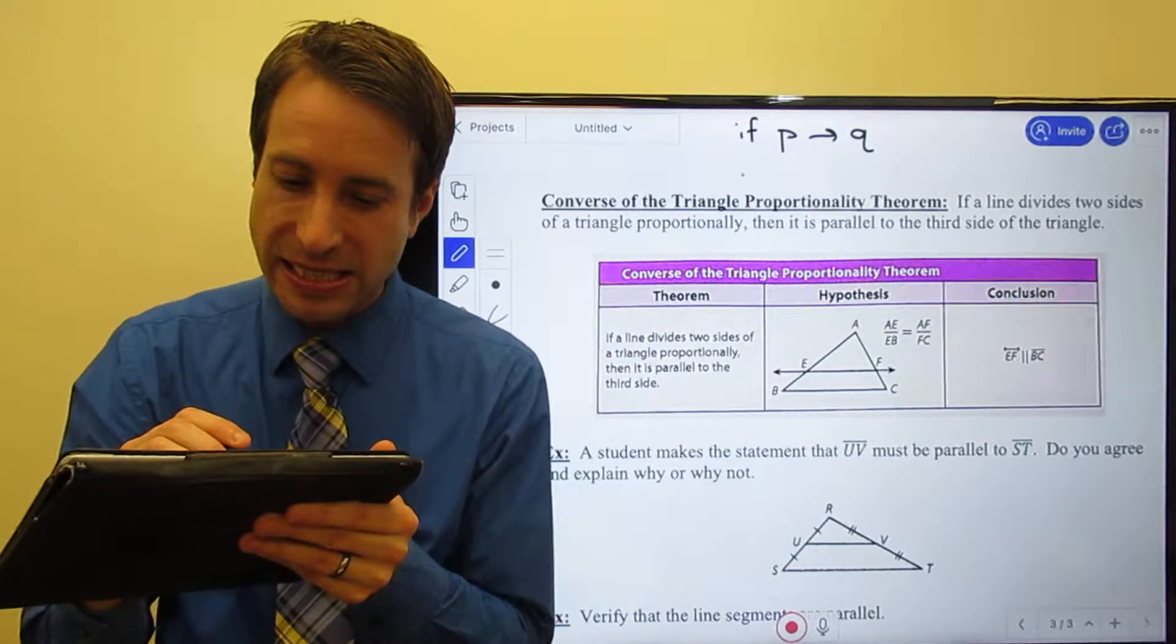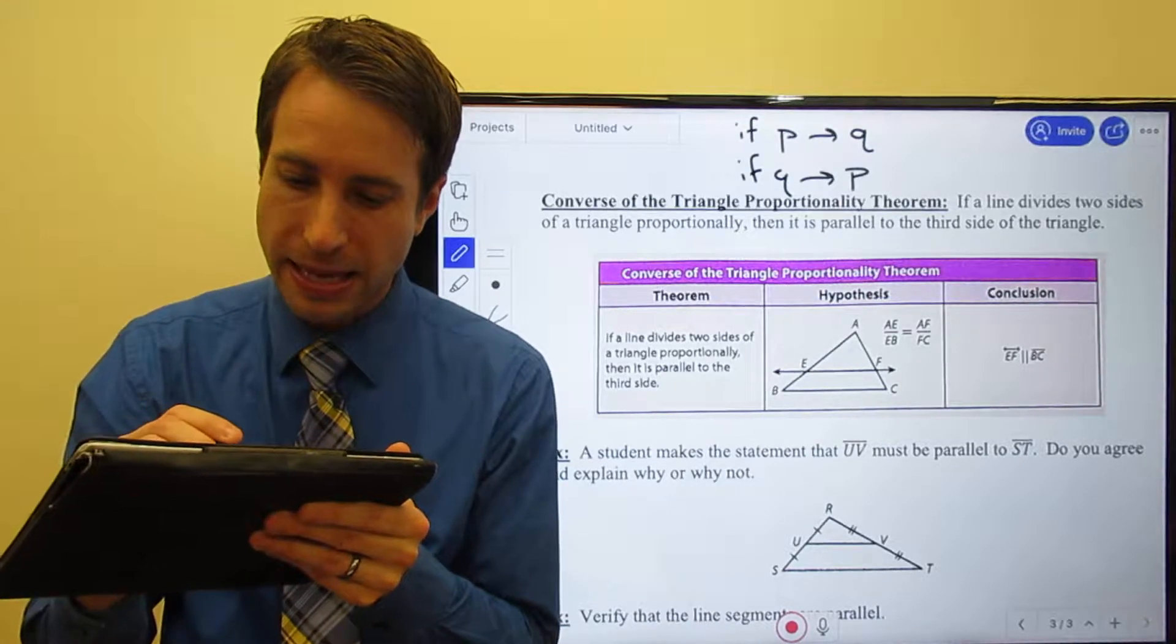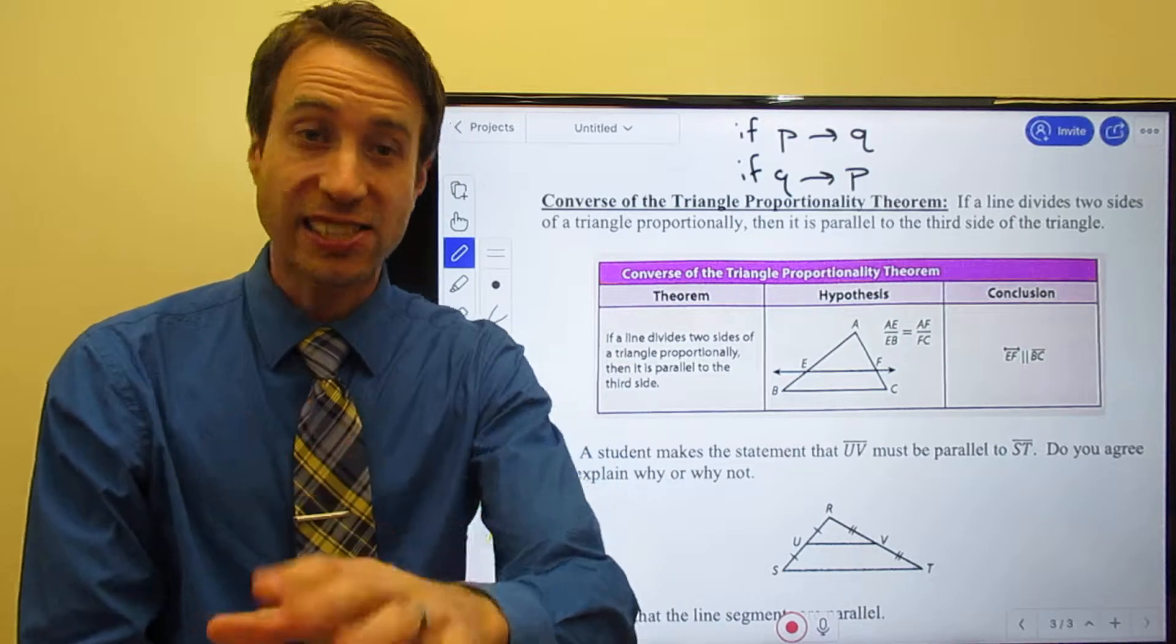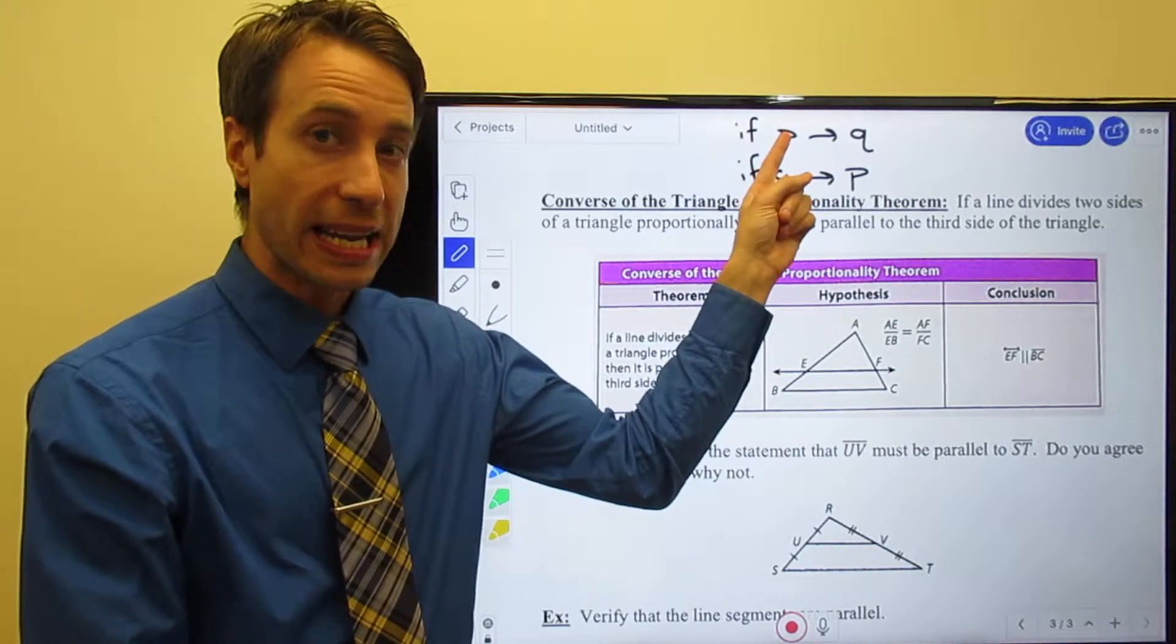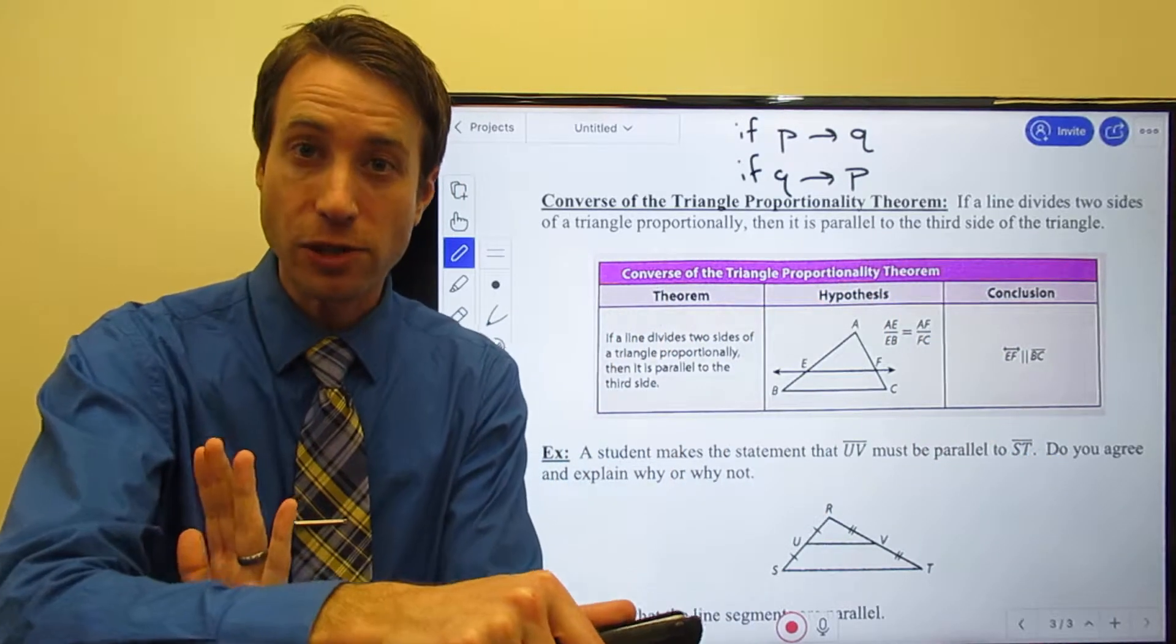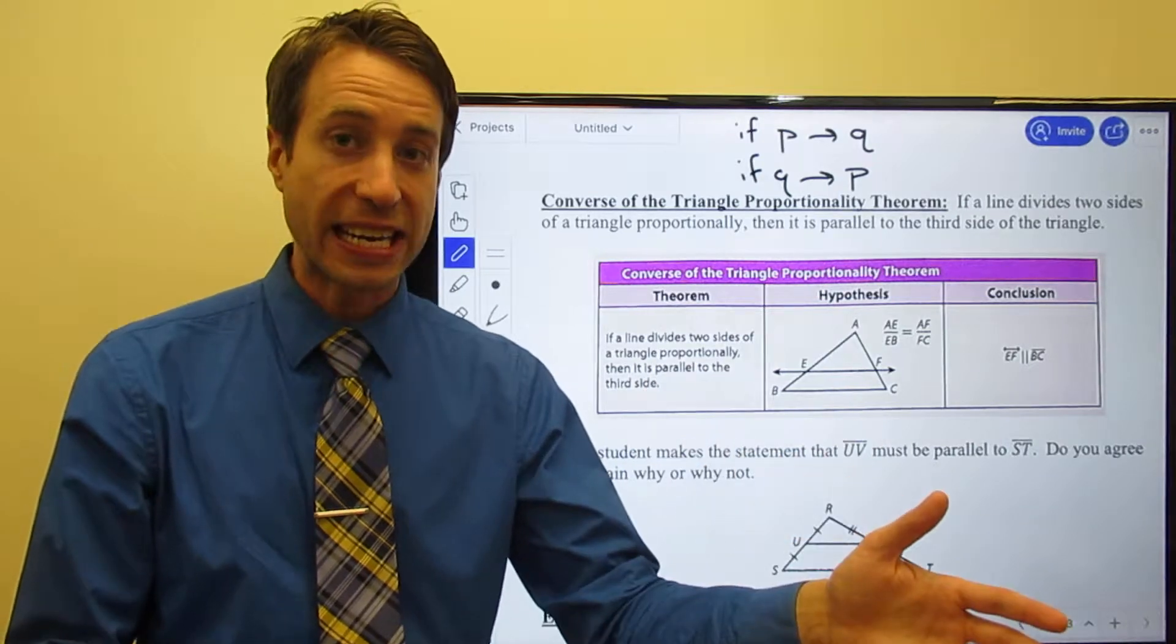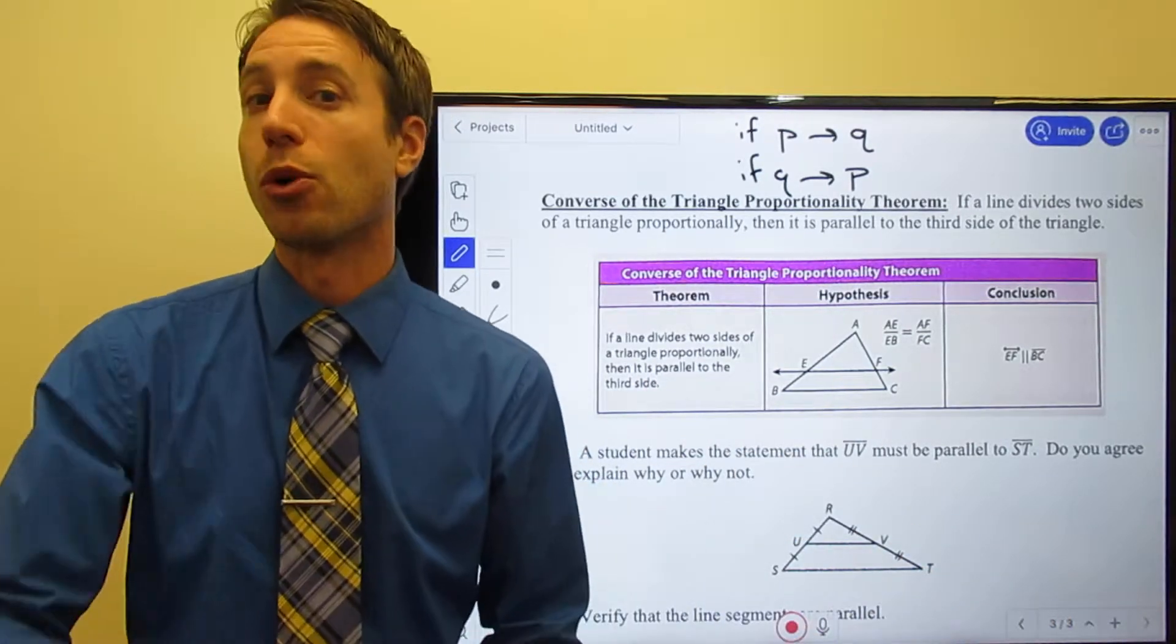So what we get then is if Q then P. So my statement is if it's raining outside, then I will take an umbrella. The converse of that would be if I take an umbrella, then it's raining outside. So here we go.